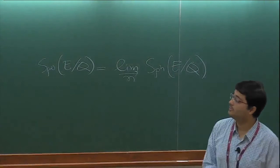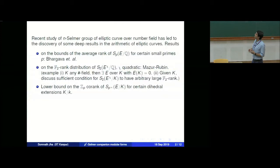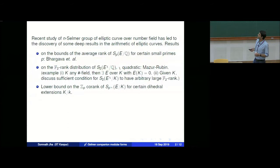Taking the direct limit of p^n-Selmer groups, one can define the p^∞-Selmer group, which is a cofinitely generated Z_p-module. They produced large Selmer rank: given certain dihedral extensions of order 2p^n, they show the Selmer rank is at least p^n. This produces a large Z_p-corank on the Selmer group, which has relation with the p-parity conjecture.